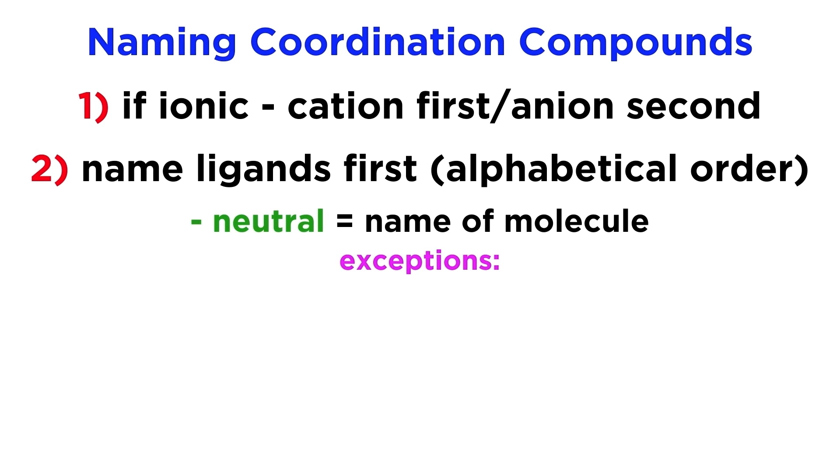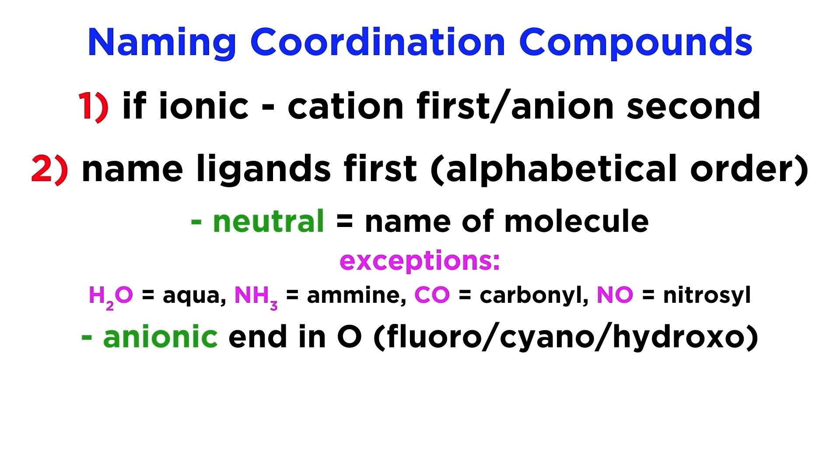However, there are some common exceptions to this rule, including water, ammonia, carbon monoxide, and nitrogen monoxide, which as ligands will be called aqua, amine, carbonyl, and nitrosyl. For anionic ligands, these will end in the letter O, and the names will be quite intuitive, like fluoro, bromo, and the rest of the halogens, as well as others like cyano or hydroxo.